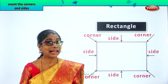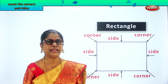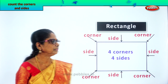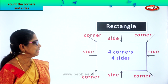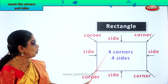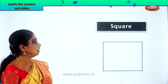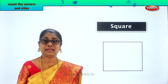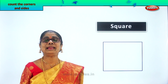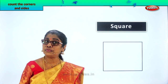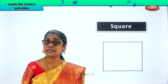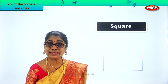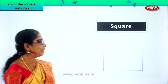Shall we look at another plain figure? Good. What do we see here? Four corners, four sides. What does the rectangle have? Four corners, four sides, and opposite sides are equal.